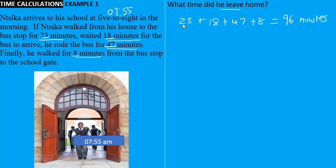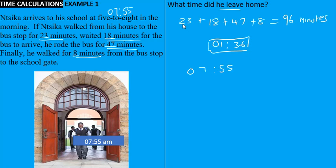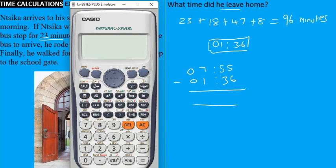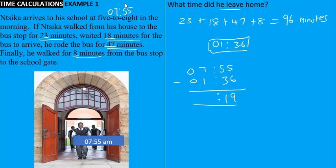Remember all of these times were in minutes. Before we can do the calculation, we need to break the 96 minutes into hours and minutes. We know one hour is 60 minutes, so if we take 60 minutes from 96 we get one hour, and 96 minus 60 leaves 36 minutes. So the time elapsed is 1 hour and 36 minutes. Taking the arrival time of 07:55 and subtracting — 55 minus 36 gives 19 minutes, and 7 minus 1 gives 6 — so Sika left home at 06:19, which is 19 minutes past 6.